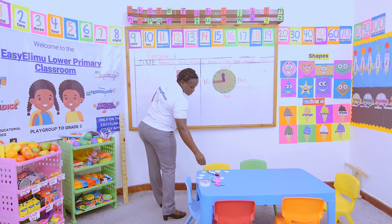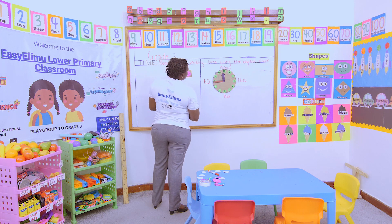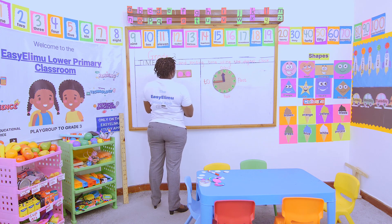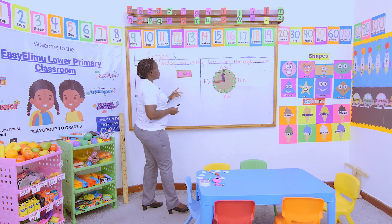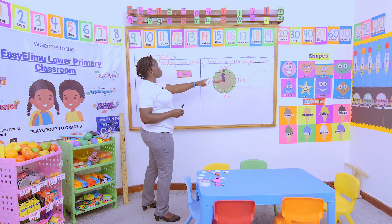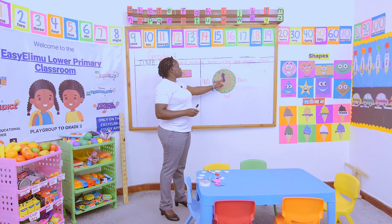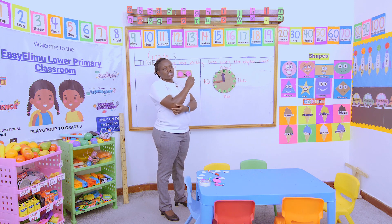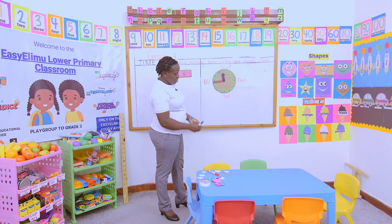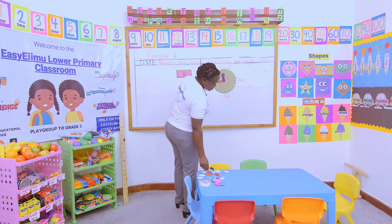That is quarter to twelve — it is eleven forty-five, showing that there are only fifteen minutes remaining to reach twelve. It has not reached twelve, but there are five, ten, fifteen minutes remaining to reach twelve. And that is how you will represent it.